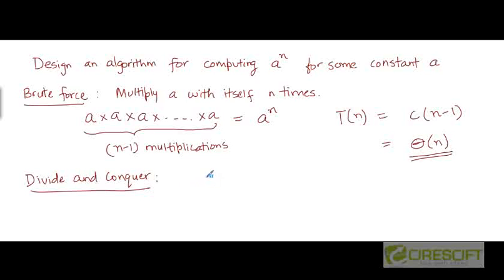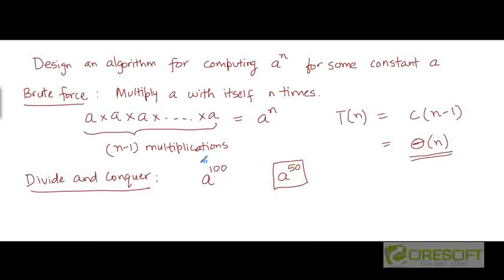Suppose we had to compute a to the power 100. How could we compute this power without multiplying a with itself 100 times? In a divide and conquer strategy, we can assume that somehow we have solutions to smaller sub-problems. So let's say we were already given what a to the power 50 is. If we just multiply a to the power 50 with itself, we will get a to the power 100. So with just one more multiplication, we can directly compute what a to the power 100 is.